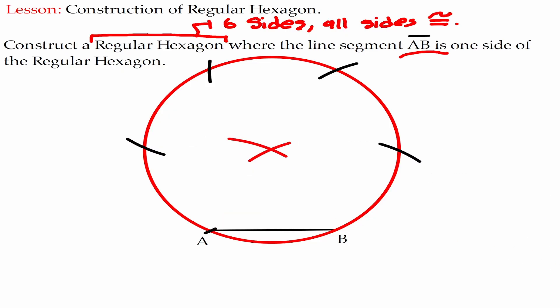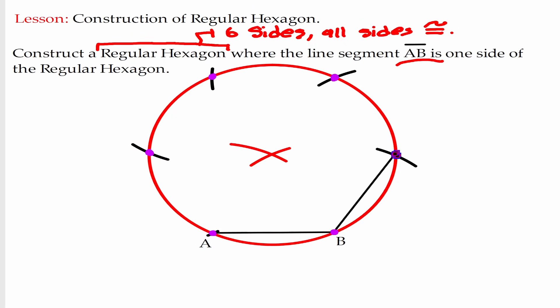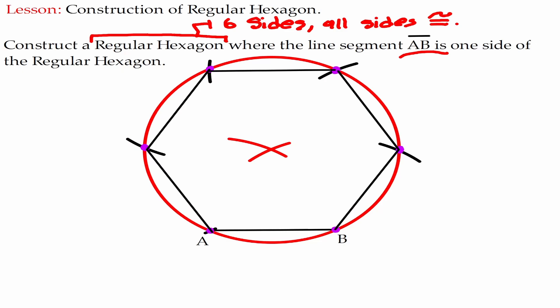Let's mark all the intersections within the circle. Now let's connect all of those intersections. Let's highlight the figure that we have created. This figure that we have just highlighted is exactly what we wanted to find — it's a regular hexagon. Notice how many sides we have: we got six sides, and all of the sides are congruent to each other, so it fits the definition of a regular hexagon.